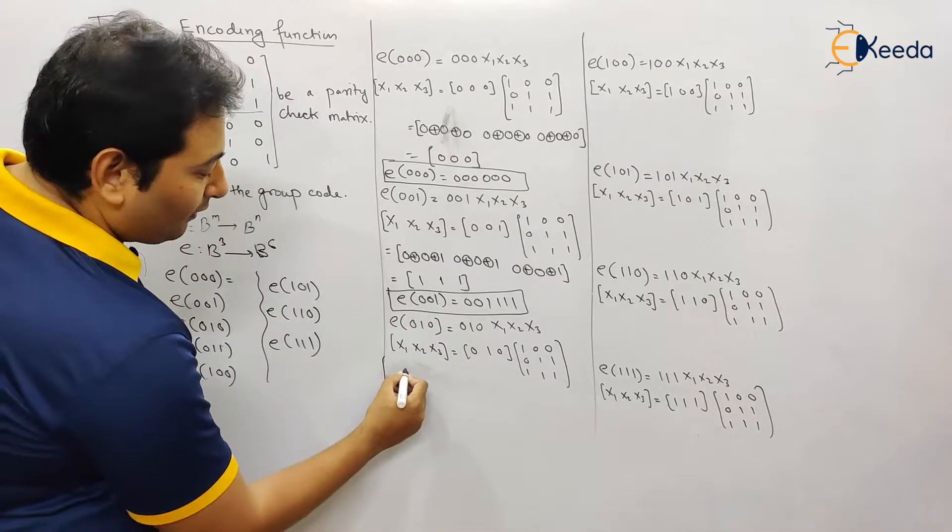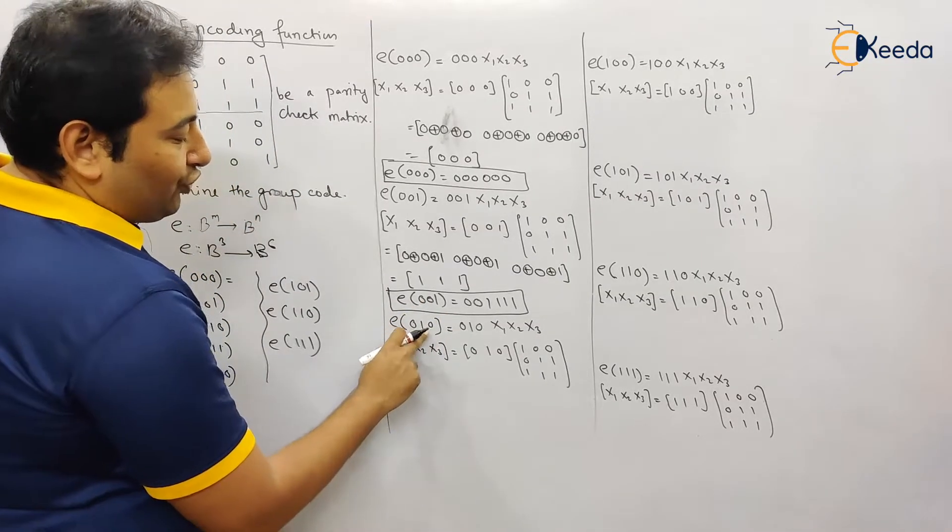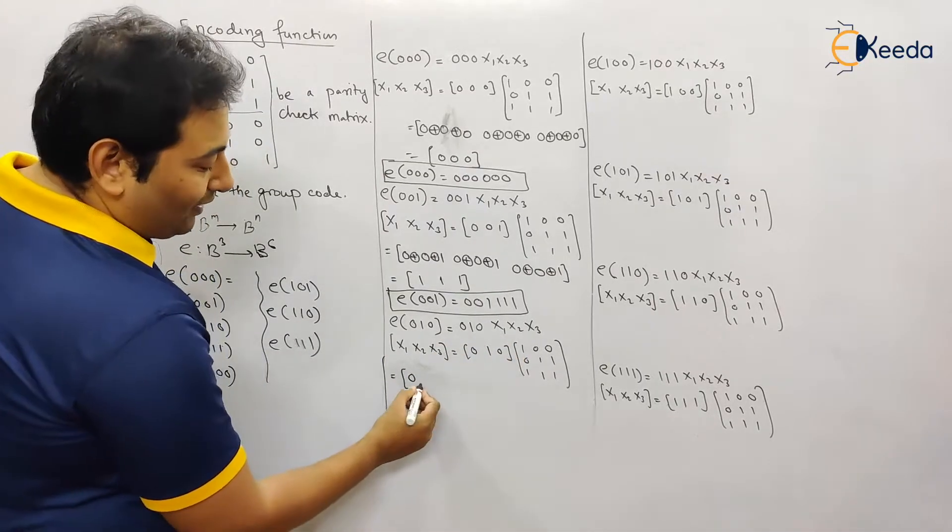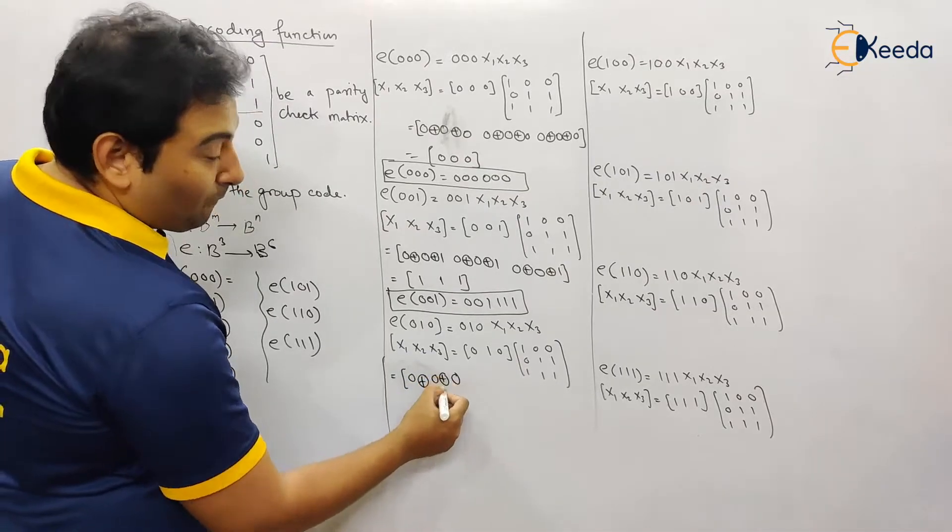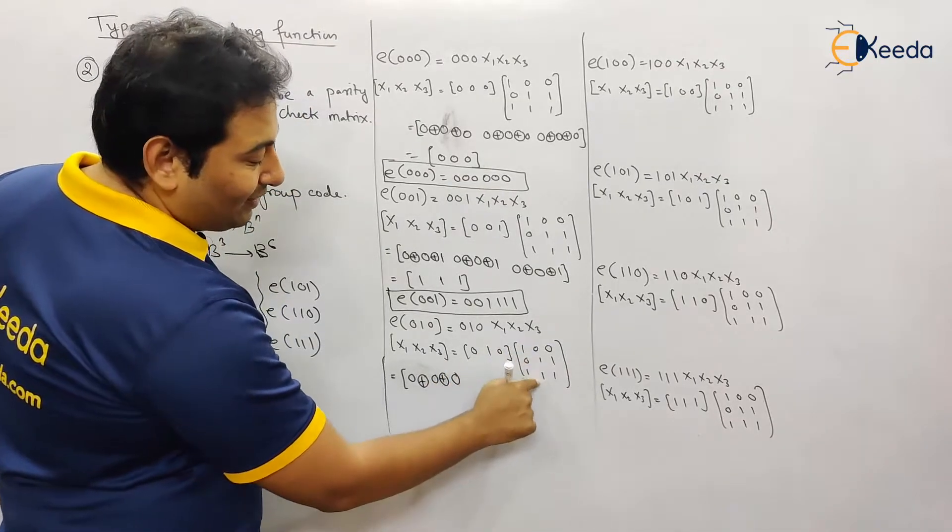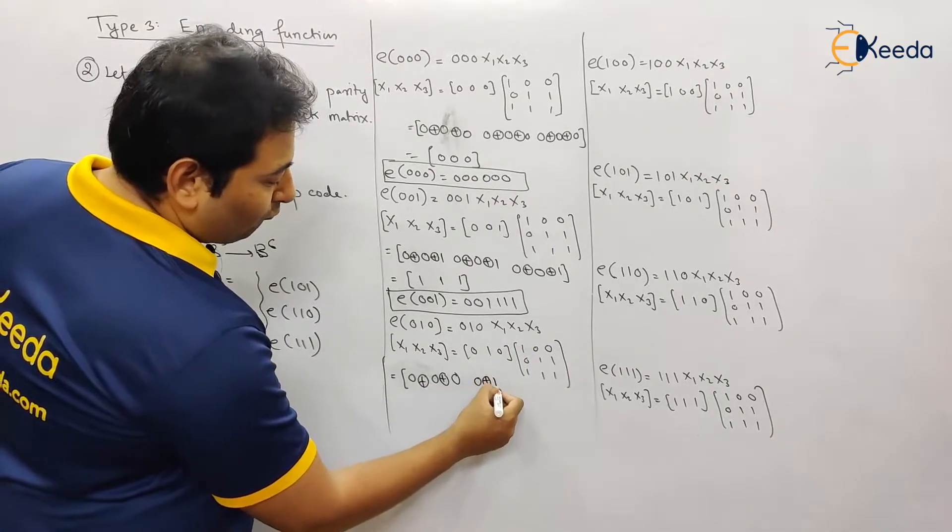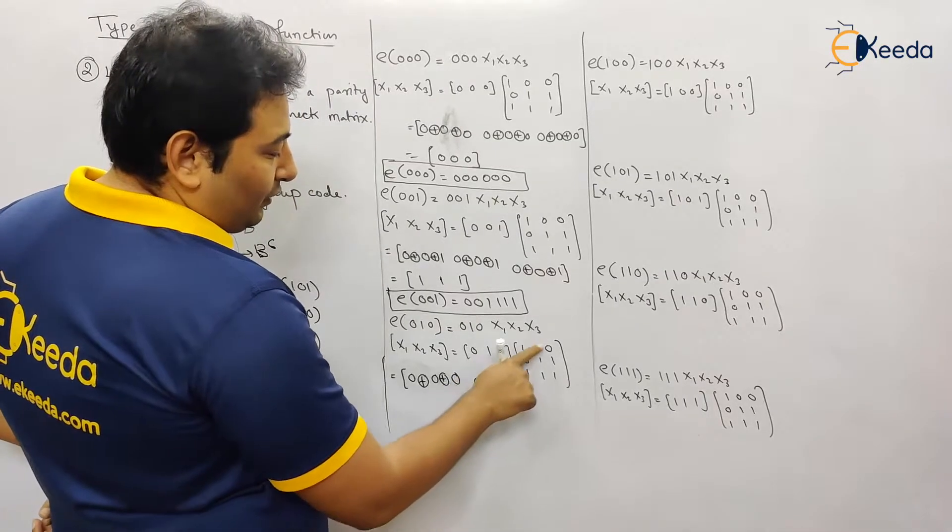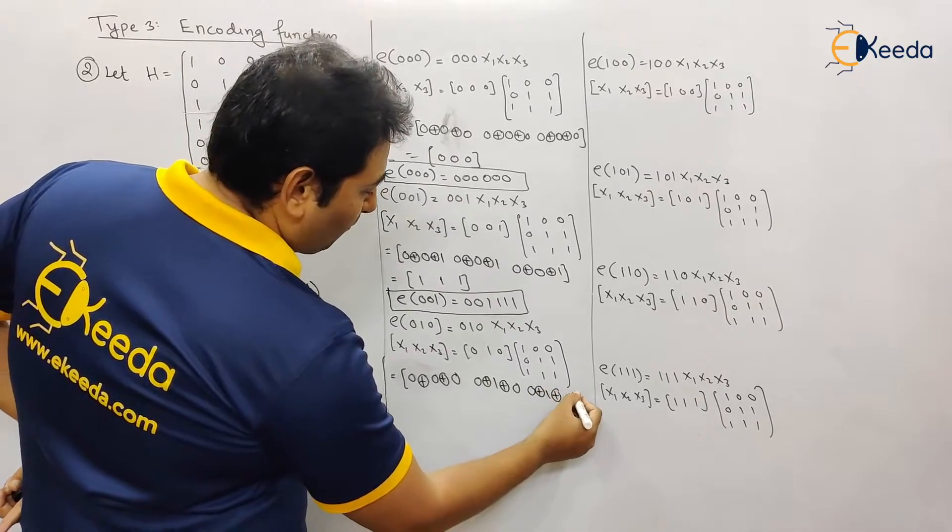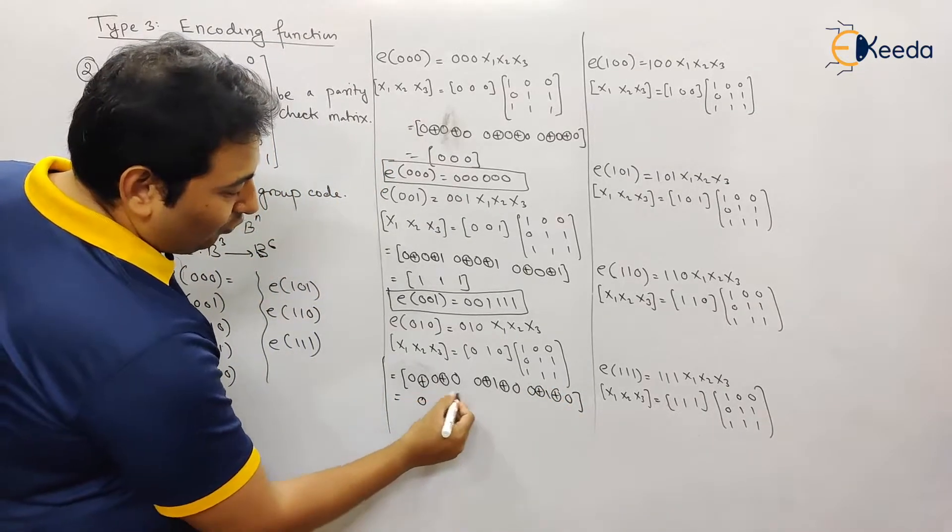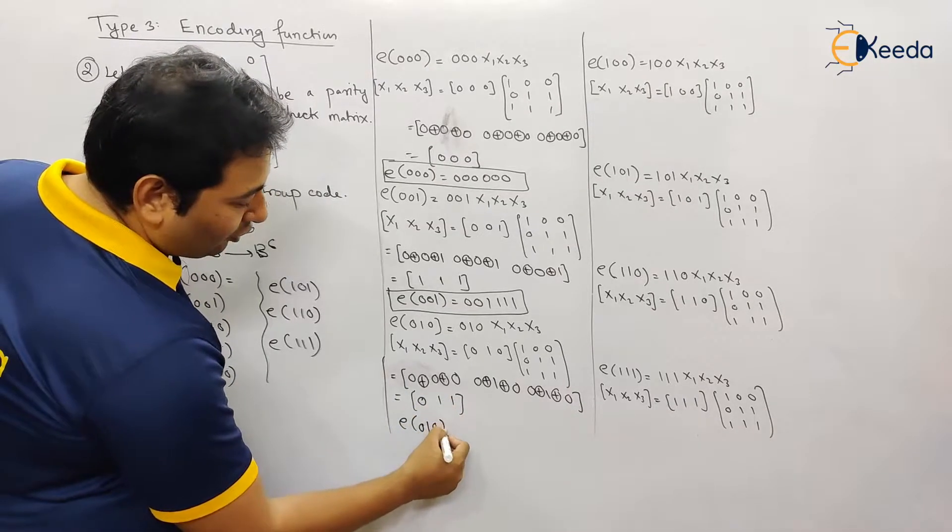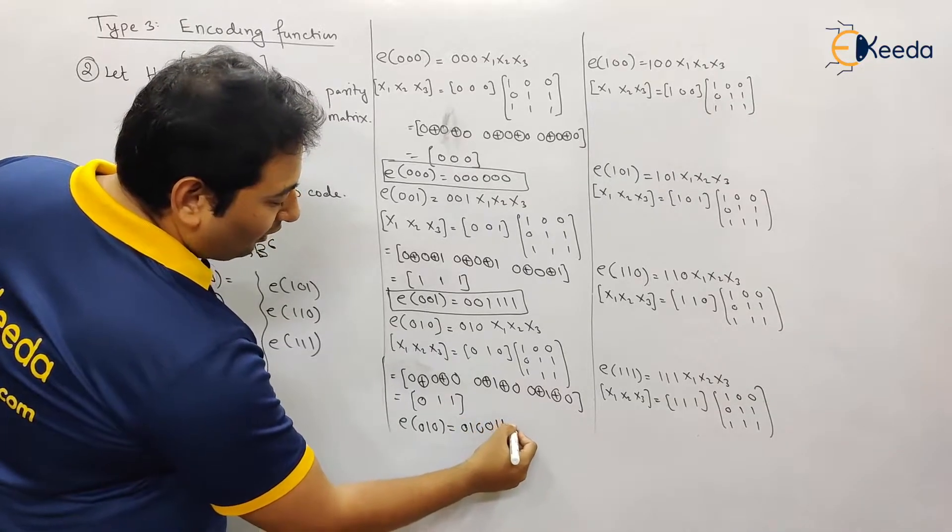Next, let's find the code for e 0 1 0. That will be equal to 0, 1, and 0. Next, 0, 1, and 0 again. So what is the code? This is 0, this is 1 and 1. So in short, the code for e 0 1 0 is 0 1 0 along with 0, 1, and 1.